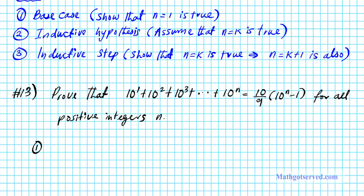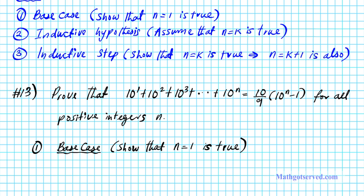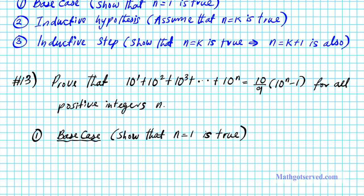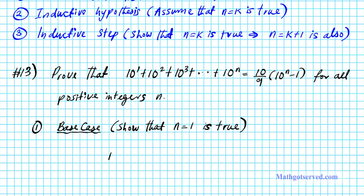Part one is the base case. We have to show that n equals 1 is true. What I'll do is plug in 1 into the left-hand side and the right-hand side of my equation and see if I end up with a true statement. On the left-hand side, 10 to the n is the generator of terms, and for n equals 1 we just look at the first term, which is 10 to the first power.